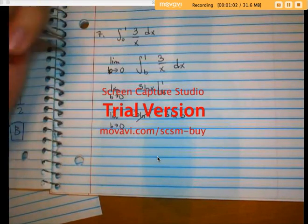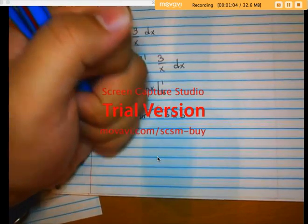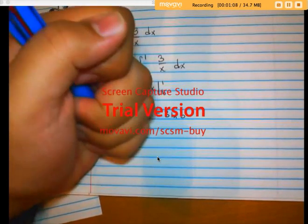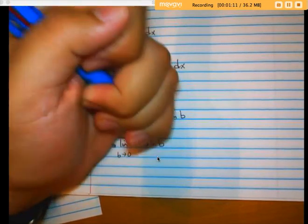This is zero, so I've got the limit as b approaches zero of negative 3 times the natural log of b.